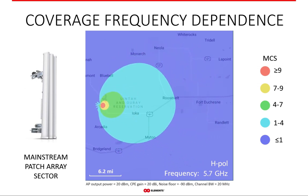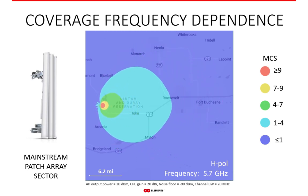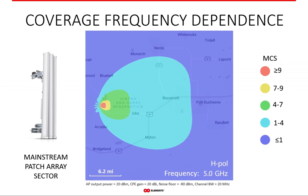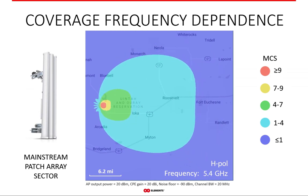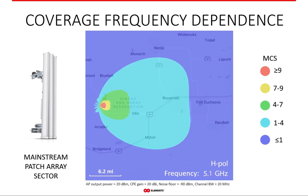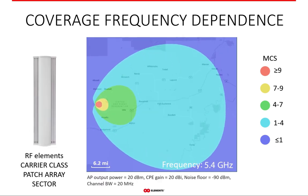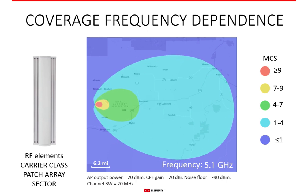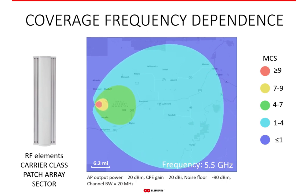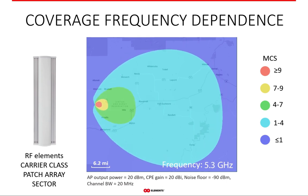This is not only a problem for sectors — it applies to any antenna based on patch array technology. This is what we mean when we say coverage is not stable or reliable: the frequency dependence of the radiation pattern makes user experience unsatisfying and keeps you as a WISP constantly busy servicing links that change whenever you switch channels. In contrast, the RF Elements patch array sector coverage fluctuates somewhat, but overall it is much more stable than most comparable antennas.